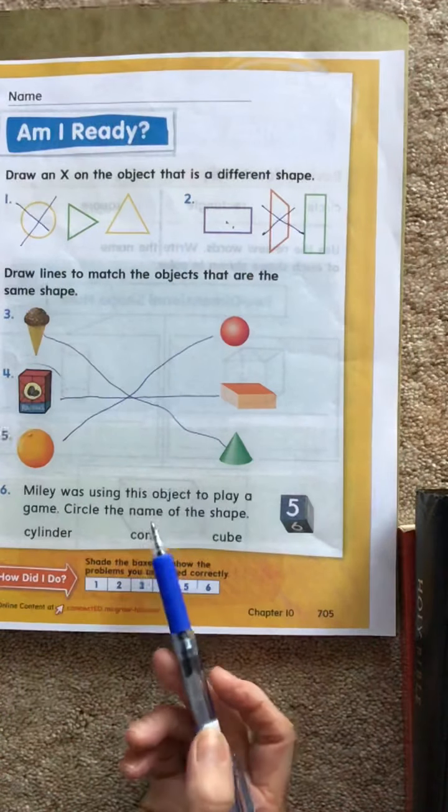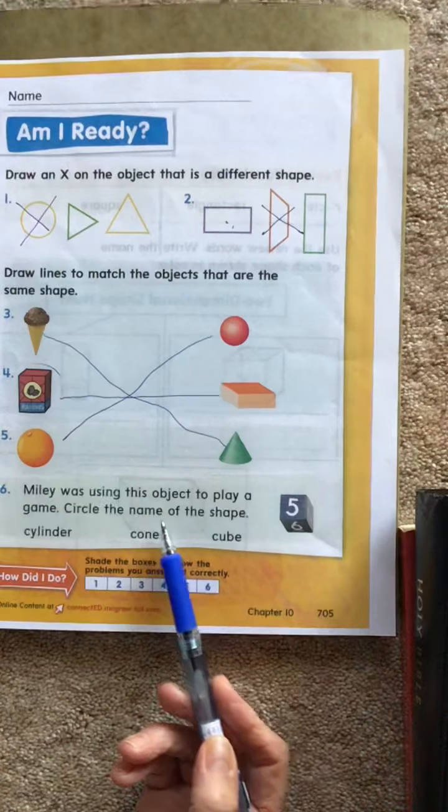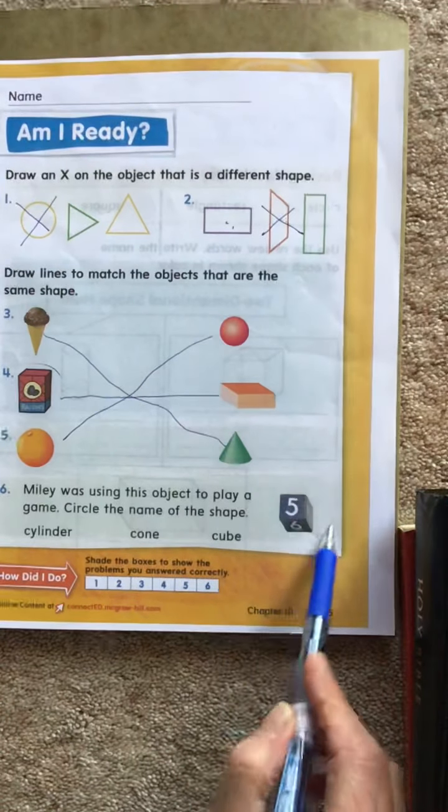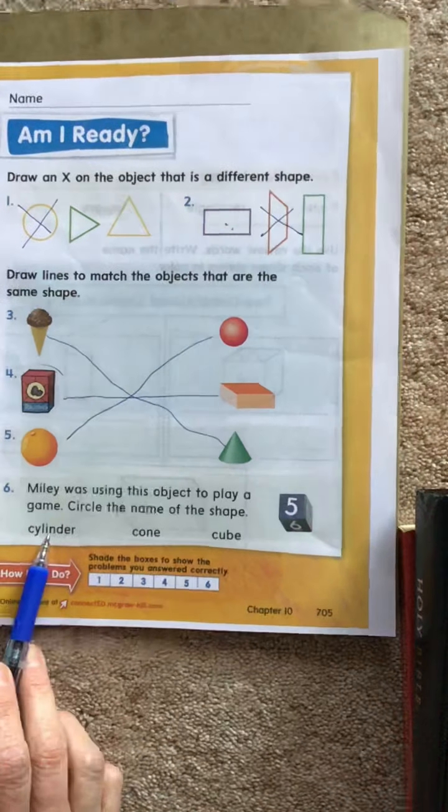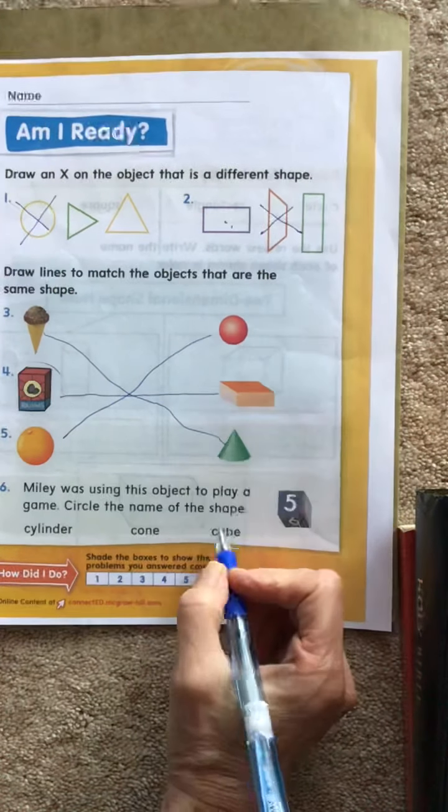Miley was using this object to play a game. Circle the name of the shape. Okay, she was using this object. It's a dice. Would we call that a cylinder, a cone, or a cube? Okay, it's a cube.